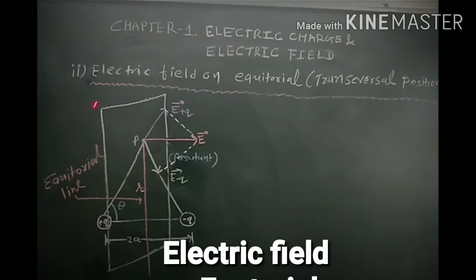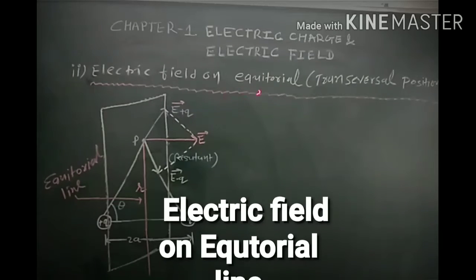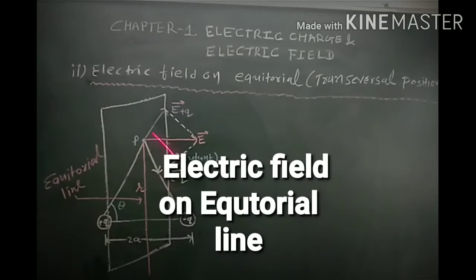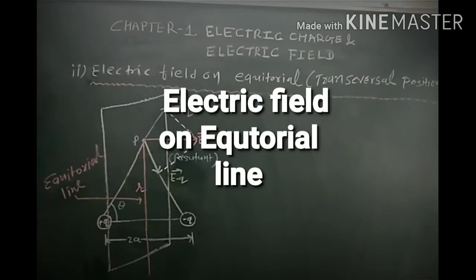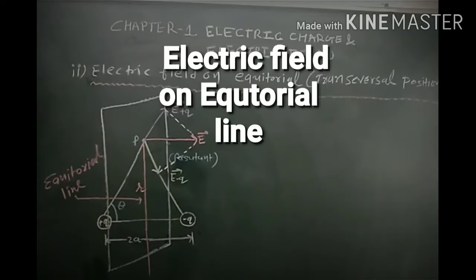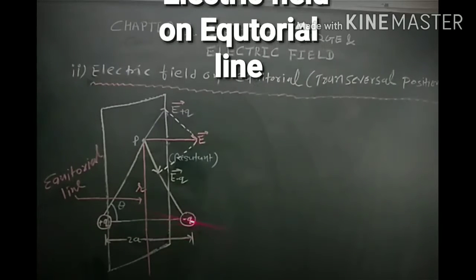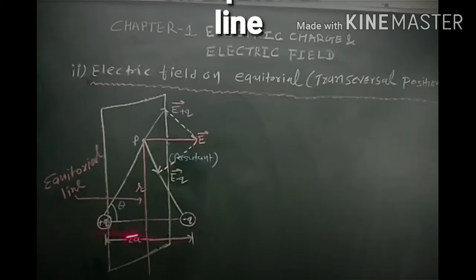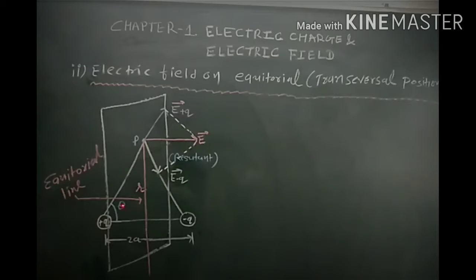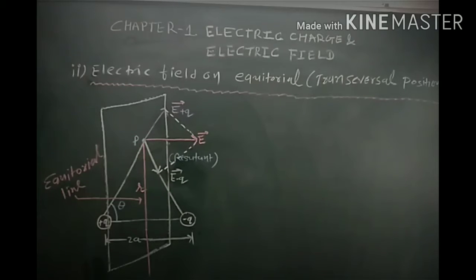Now we discuss about electric field on the equatorial or transversal position. In the figure we can see that the plus q and minus q charges form an electric dipole separated by distance 2a. The equatorial line or transversal line is the bisector — the pink line shown in the figure.